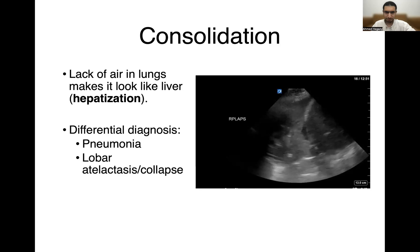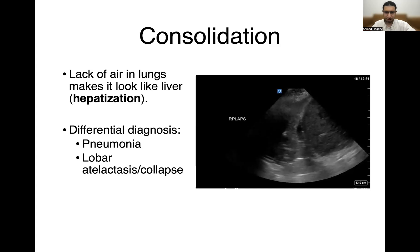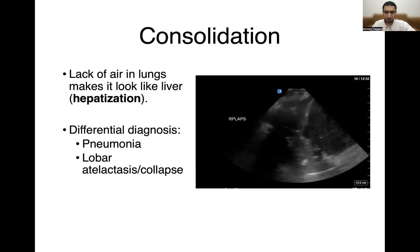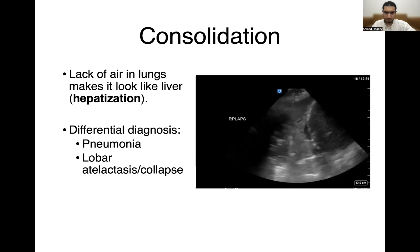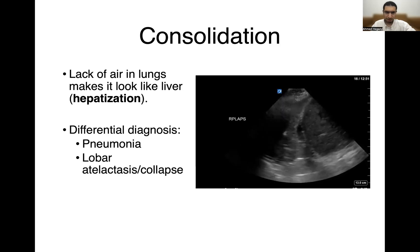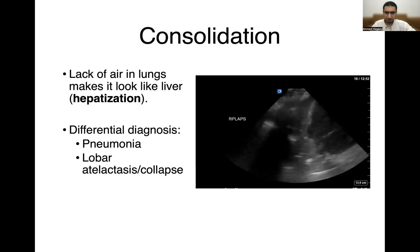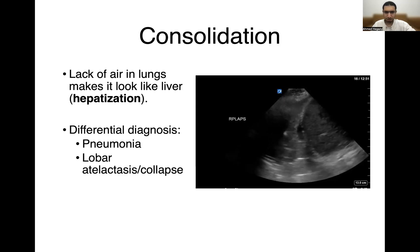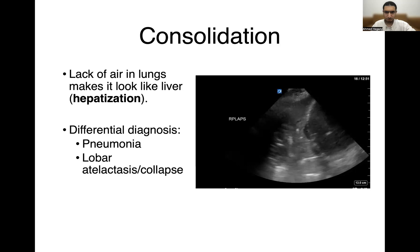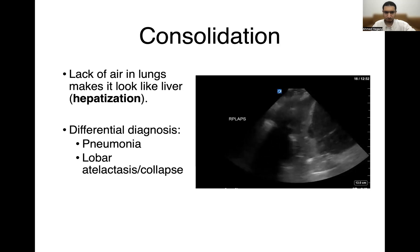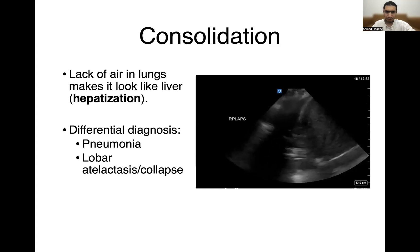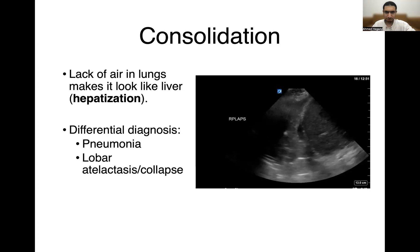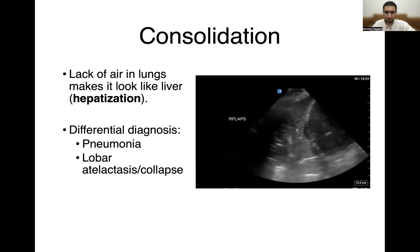This is what we call hepatized lung — it looks like liver. The differential diagnosis of hepatized lung includes pneumonia and atelectasis, or lung collapse. In the next few slides, we will differentiate between what pneumonia looks like on ultrasound and what atelectasis or lung collapse looks like on ultrasound.